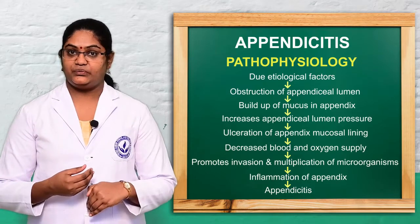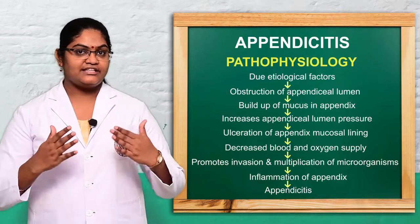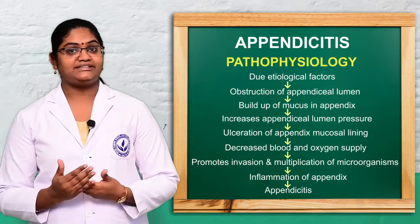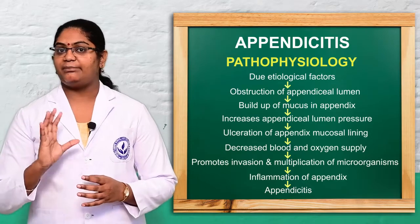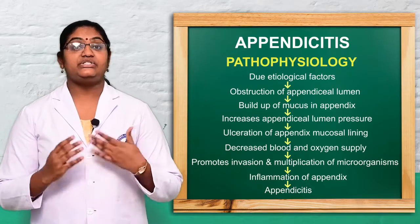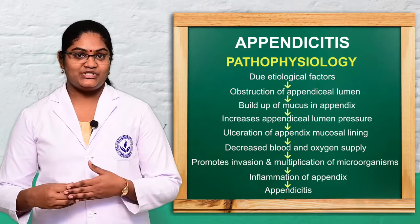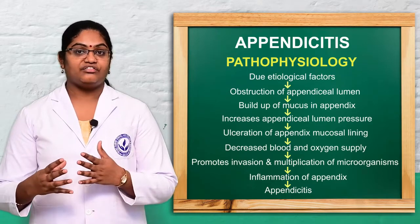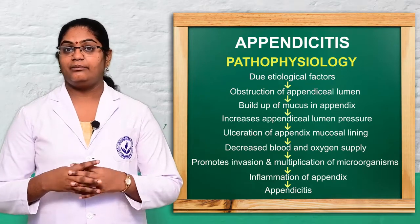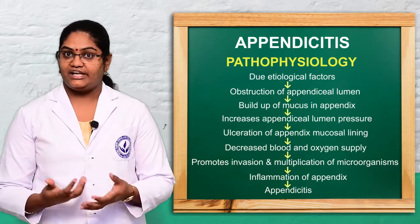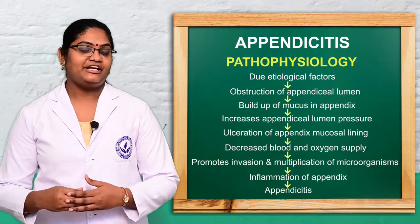The ulceration leads to decreased oxygen and blood supply. When there is a reduction of oxygen and blood supply, this leads to invasion of microorganisms inside the appendix. When there is invasion or multiplication of microorganisms, that leads to inflammation and edema of the appendix. The final result is pus production, swelling, and infection — leading to appendicitis.